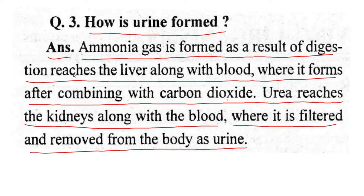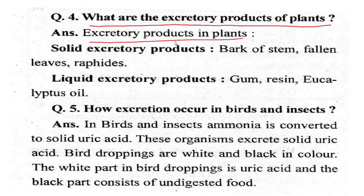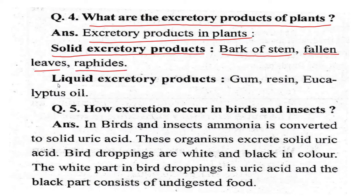Question four: What are the excretory products of plants? Solid excretory products include bark of stem, fallen leaves, and raphides. Liquid excretory products include gum, resin, and eucalyptus oil.